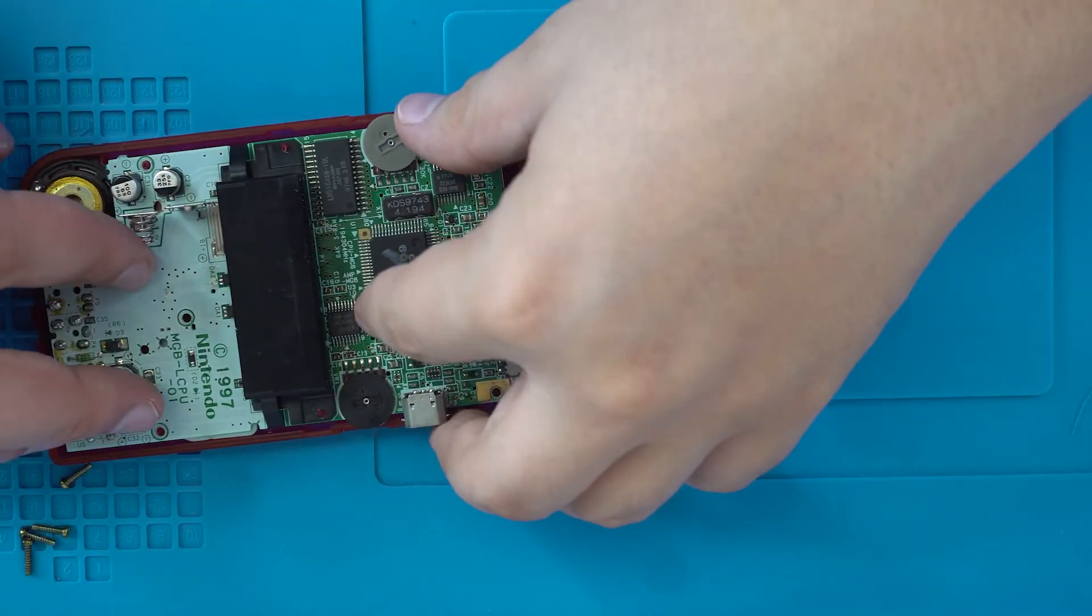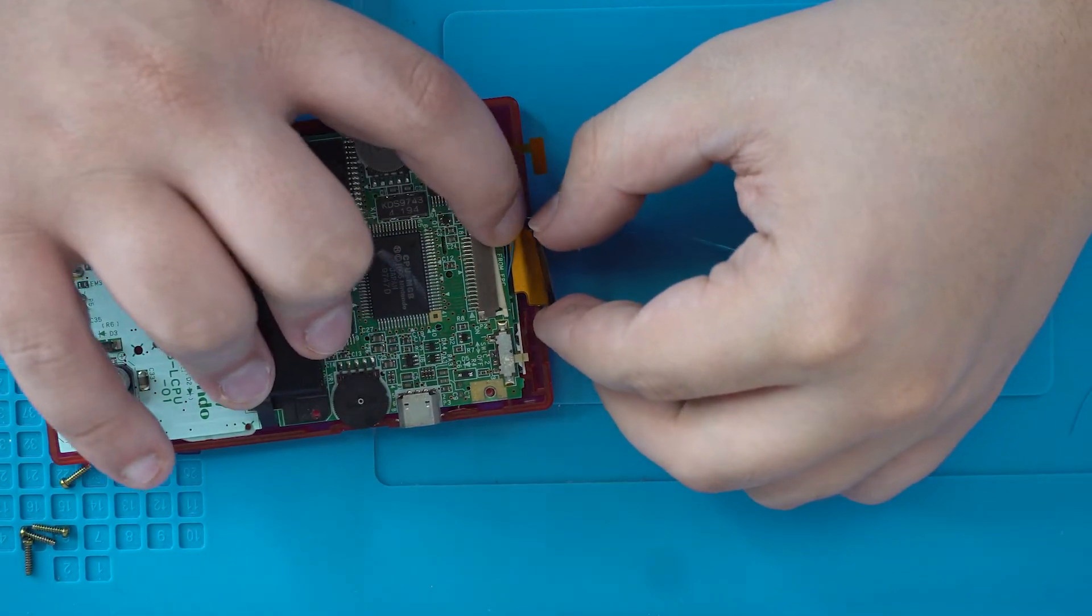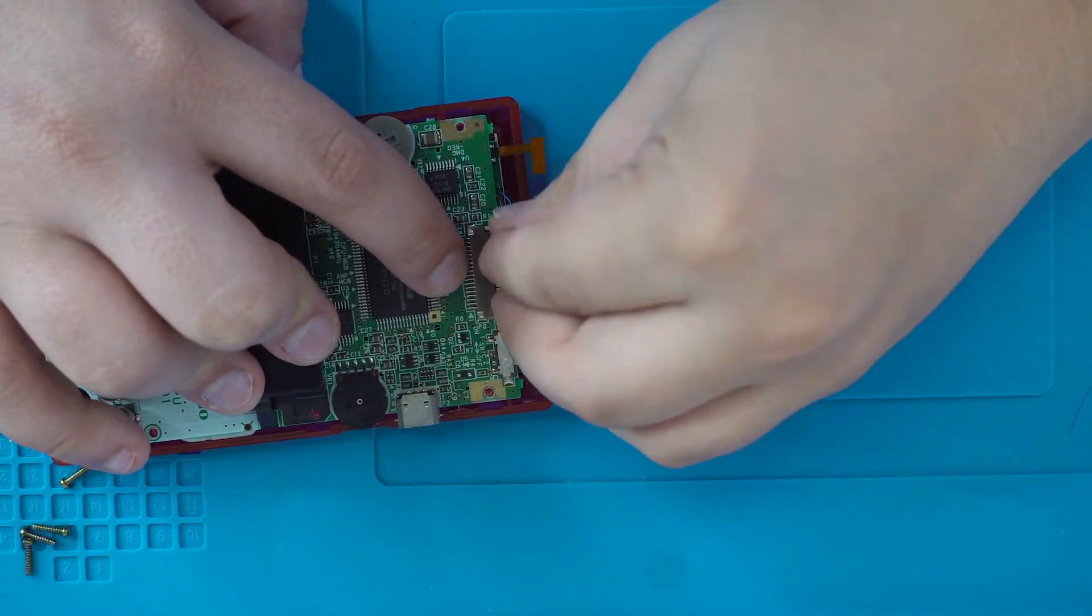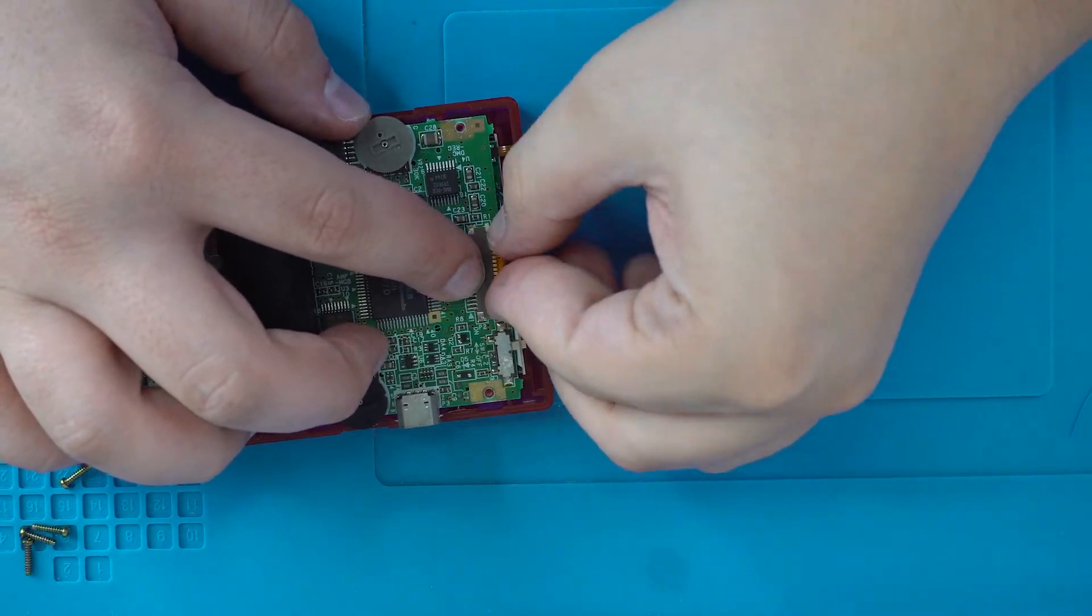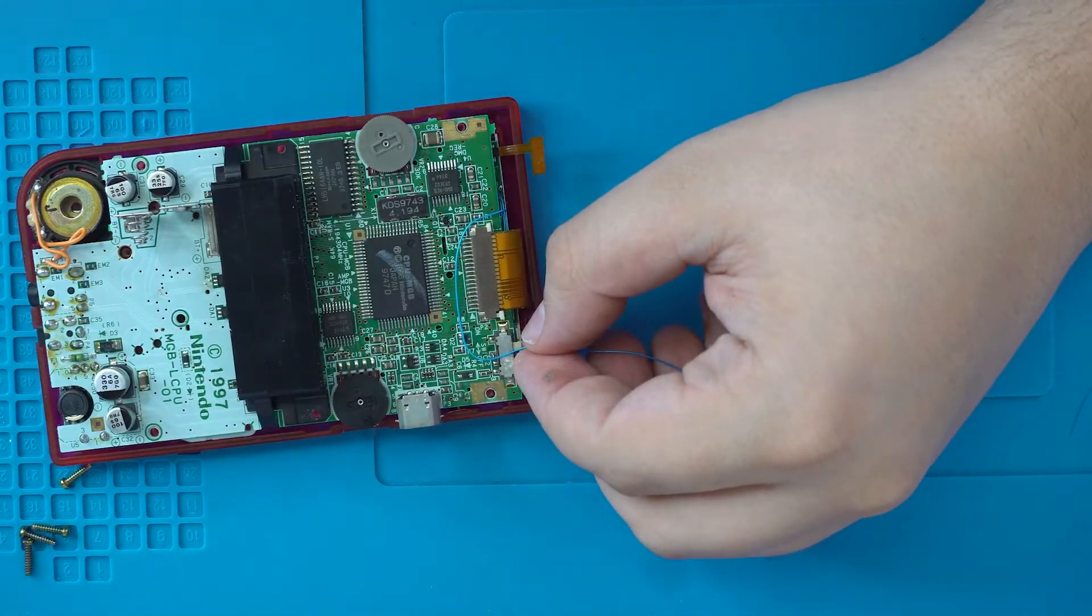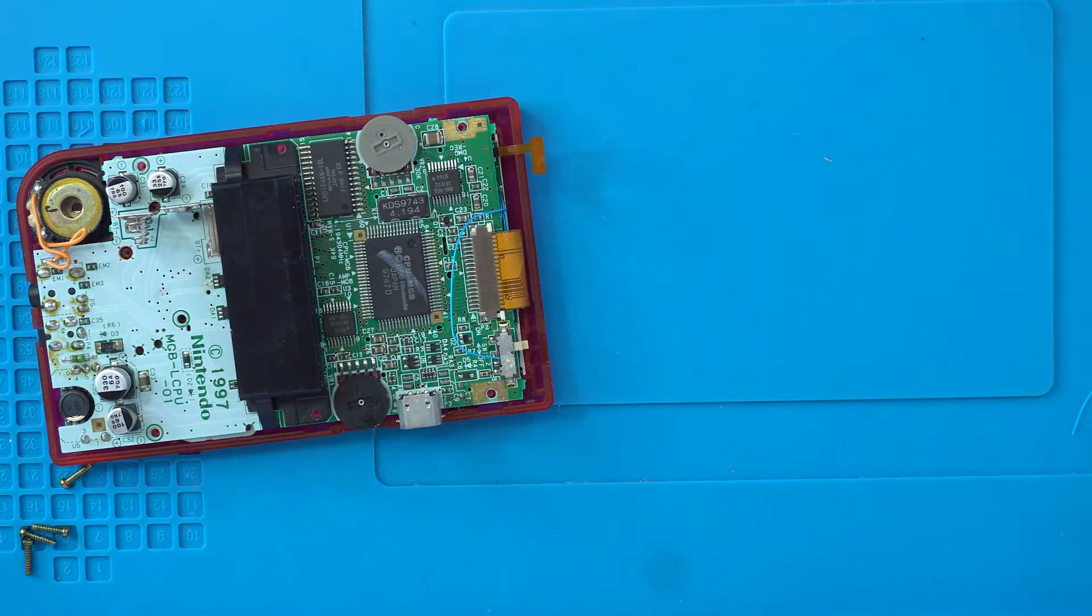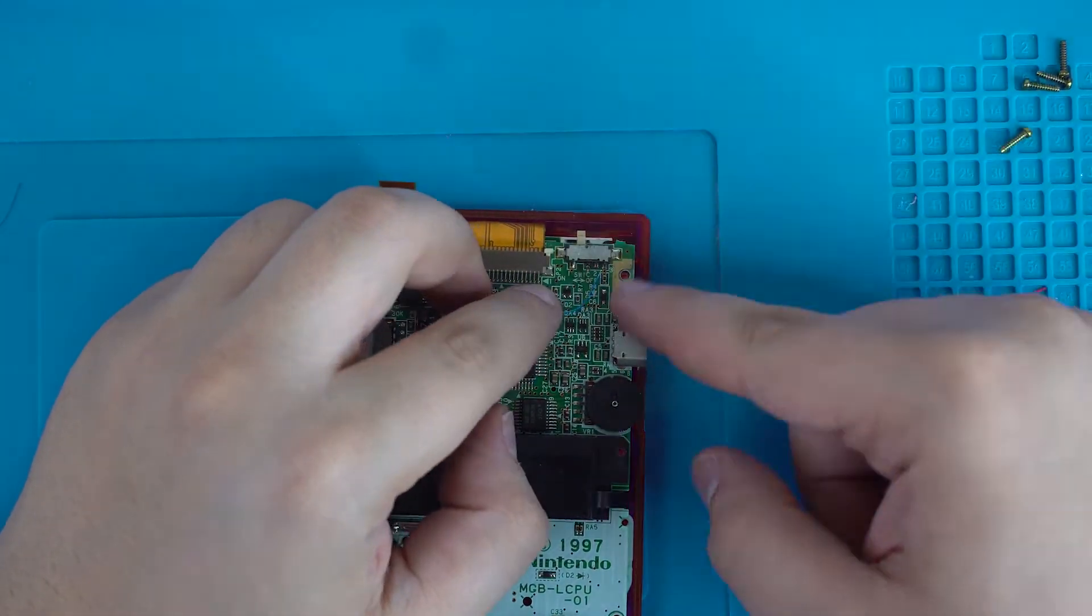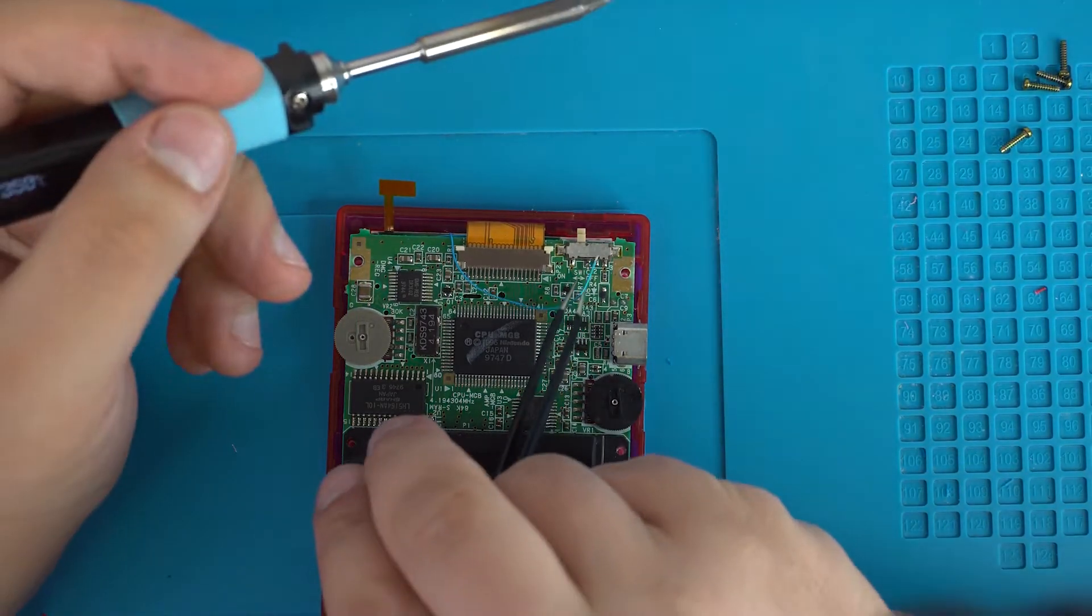Once I've got those wires soldered, I'm going to flip the motherboard over and while I'm at it, I'm going to connect the ribbon cable. After we've connected the ribbon cable, we can then solder our power wire to the third pin from the right on the power switch.